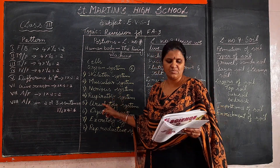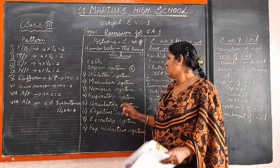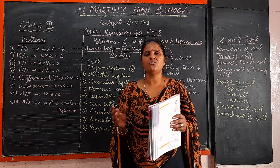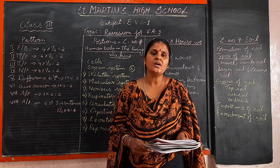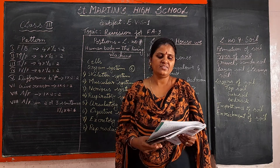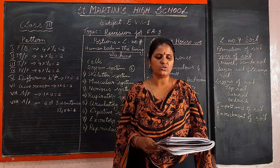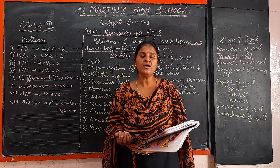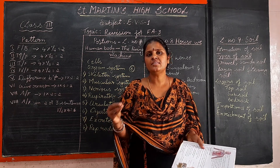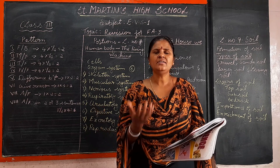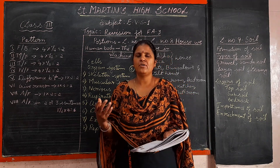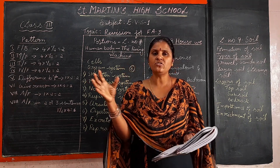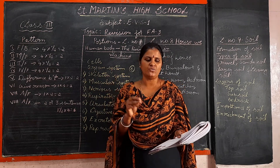Next is the circulatory system. The main organs are the heart, blood, and blood vessels. The heart pumps blood to all parts of the body. The blood travels through blood vessels, delivers oxygen to the body, and collects waste from all parts of the body.